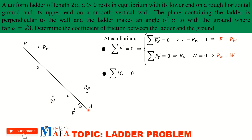The weight acts vertically downward, so its perpendicular distance from A is found by drawing a horizontal line through A. Looking at the right-angle triangle with angle alpha, we want the adjacent side with hypotenuse a, so using cosine: the perpendicular distance of W from A is a·cos(alpha).